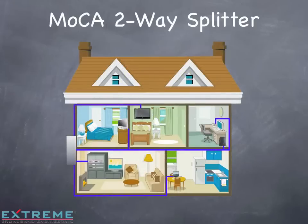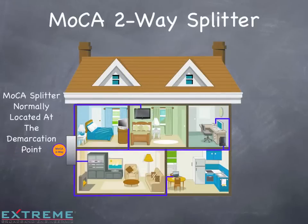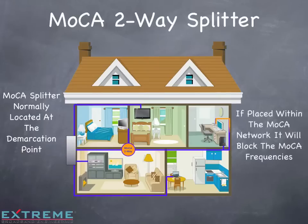The MoCA splitter is normally located at the demarcation point or the first splitter in the MoCA network. If placed within the MoCA network between MoCA devices, it will block the MoCA frequencies and cause communication errors.